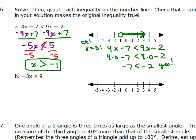Next one: negative 3x is greater than or equal to 9. So we're going to divide both sides by negative 3 — and here it goes again, I just divided by a negative, so the direction flips. It's the opposite direction, so it's going to be less than or equal. So x is less than or equal to — 9 divided by negative 3 is negative 3.